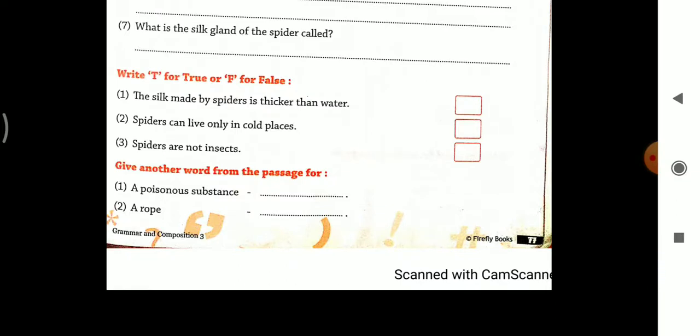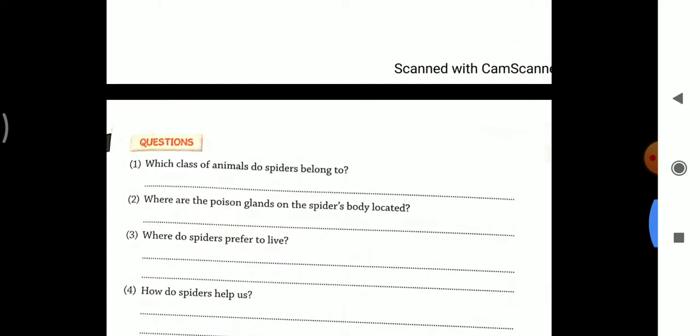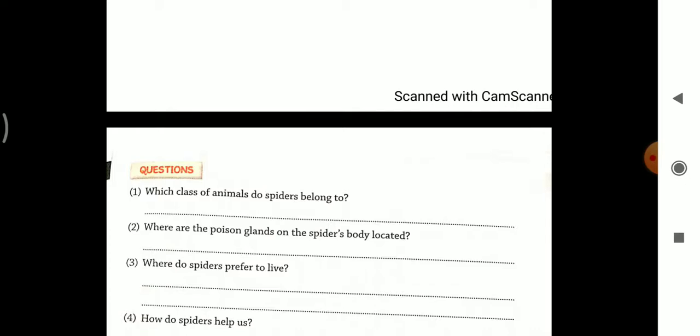Hardly two or three true or false, and give another word from the passage that you are supposed to do. Not much exercises and seven question answers. So I hope you will be able to do this comprehension and I'll give you the answers later on for sure. Thank you.